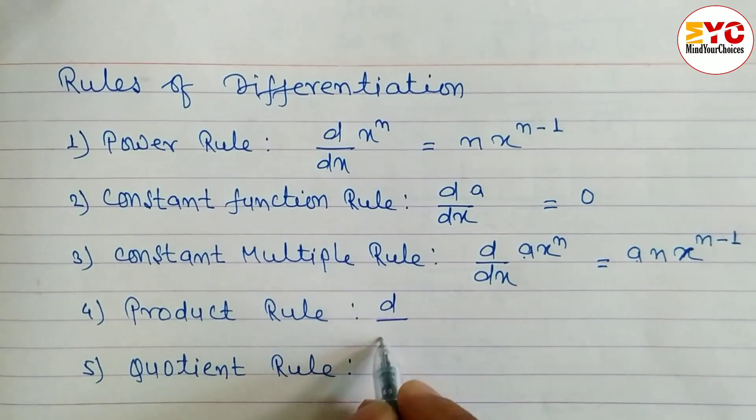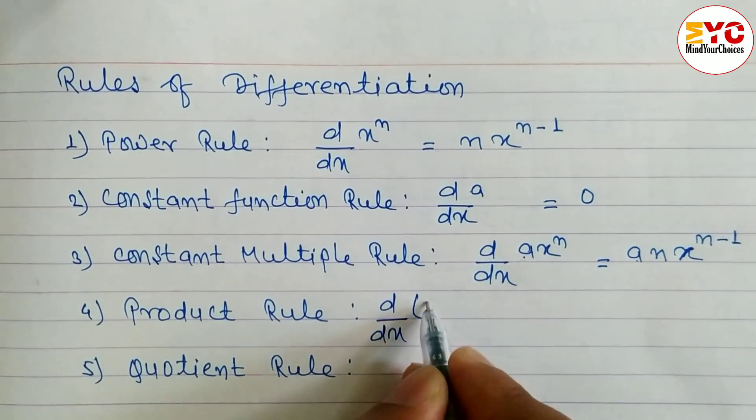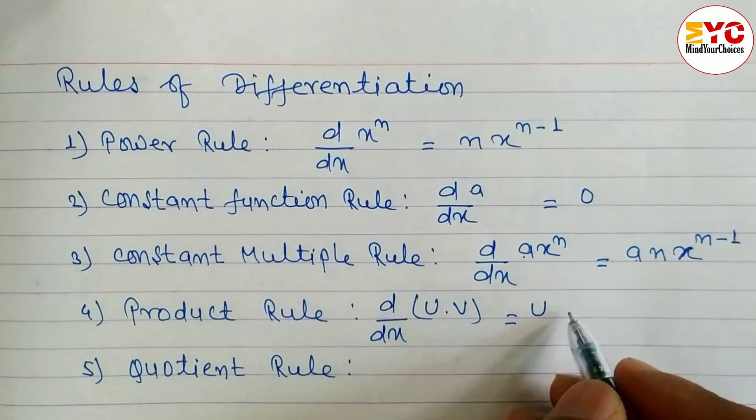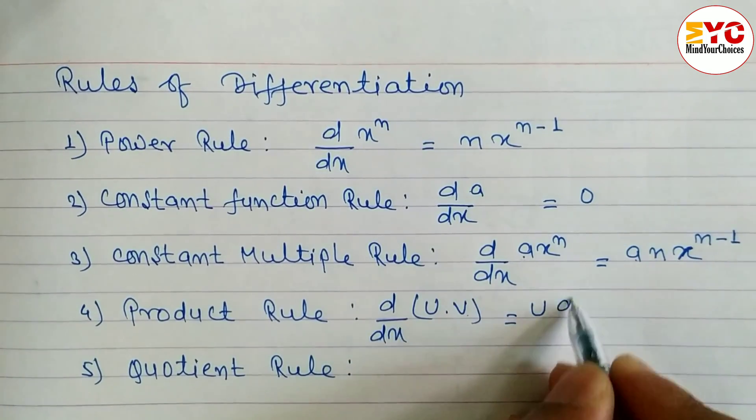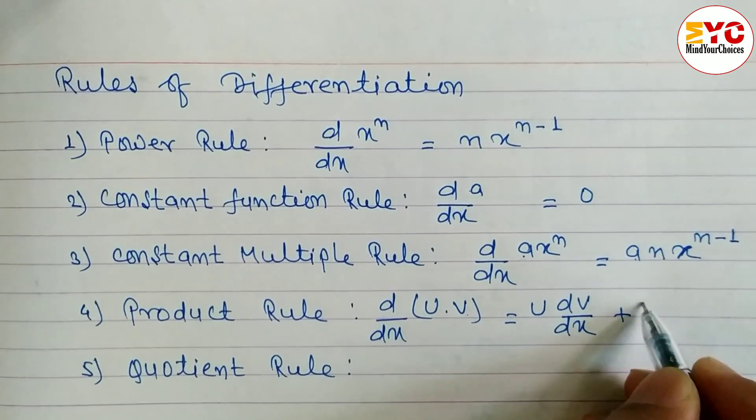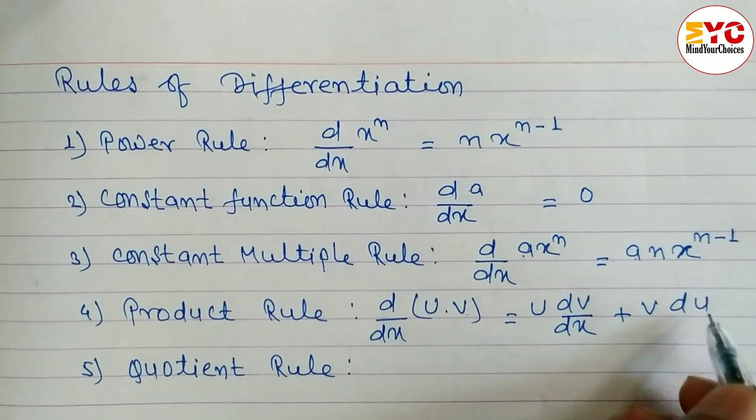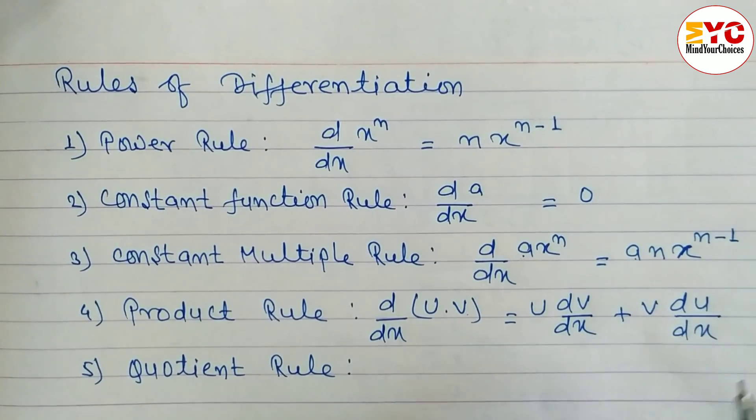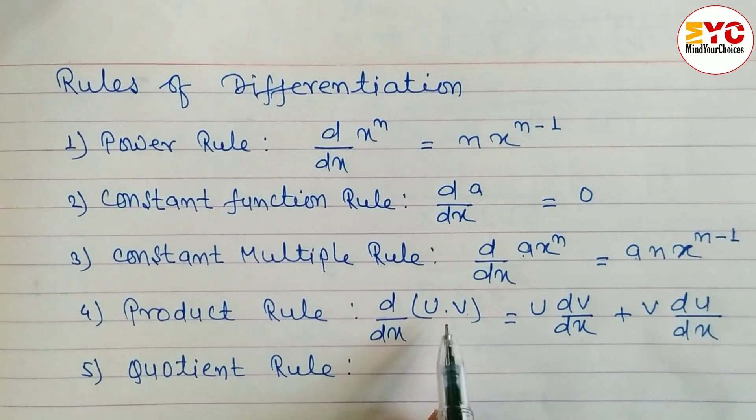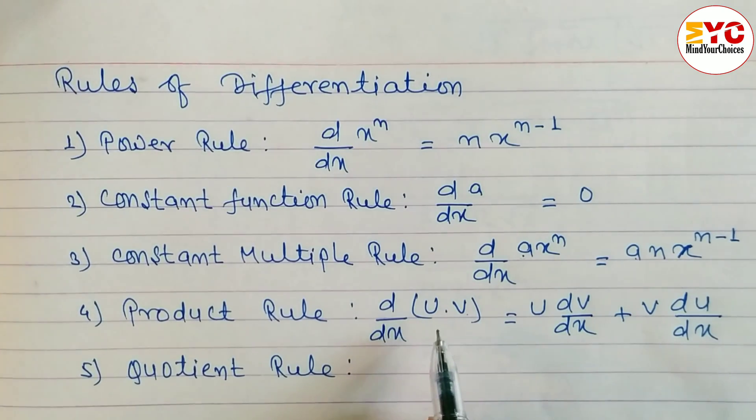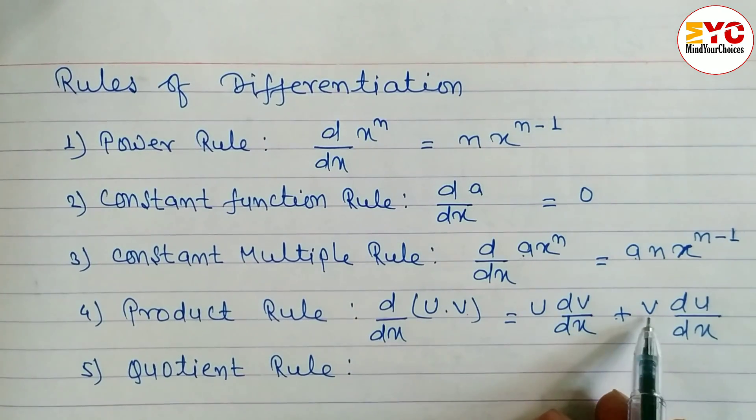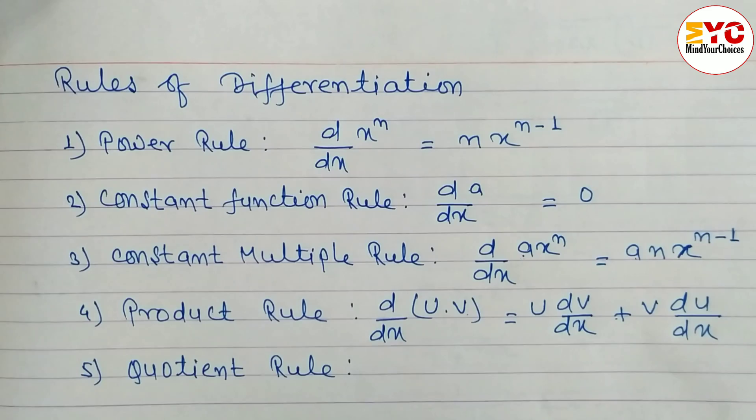The product rule: d/dx of u times v equals u times dv/dx plus v times du/dx. When two factors are given, write the first factor times the derivative of the second, plus the second factor times the derivative of the first.